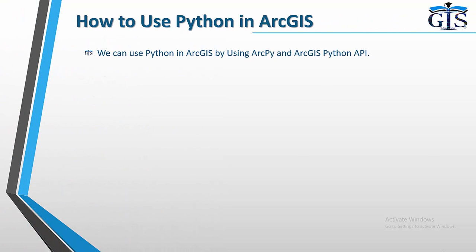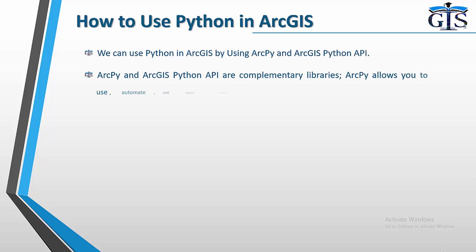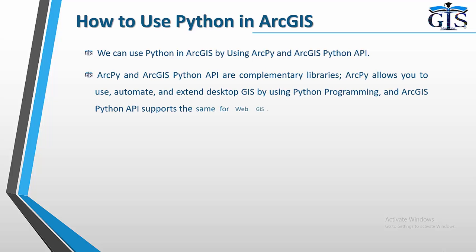How to use Python in ArcGIS: we can use Python in ArcGIS by using arcpy and the ArcGIS Python API. The question is: what are arcpy and the ArcGIS Python API? They are complementary Python libraries. Arcpy allows you to automate and extend desktop GIS using Python programming, while the ArcGIS Python API supports the same for web GIS.